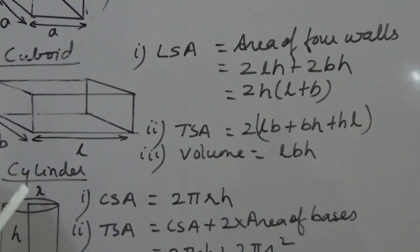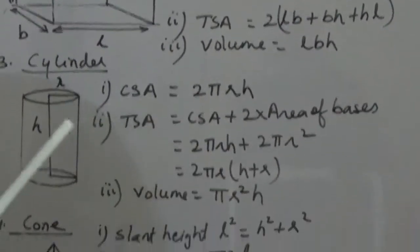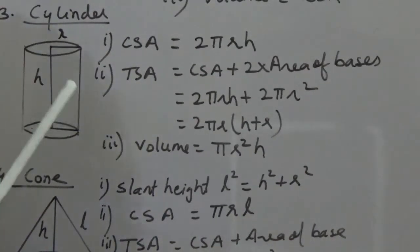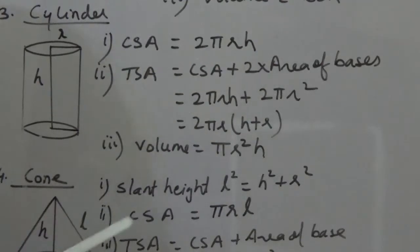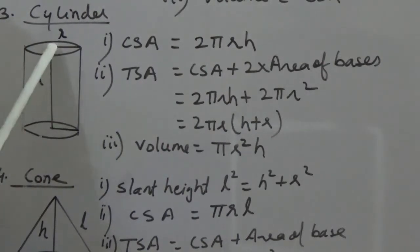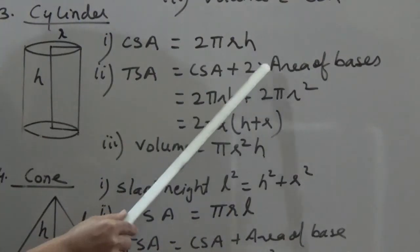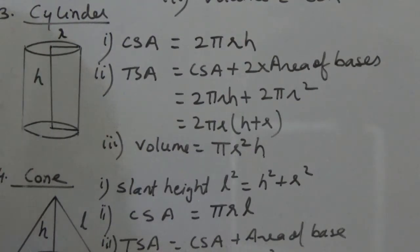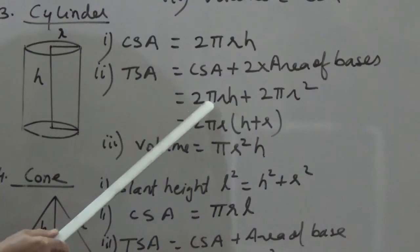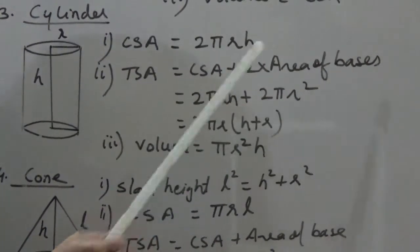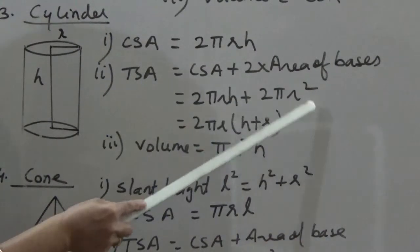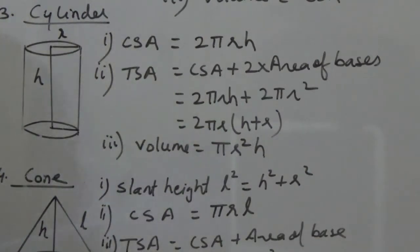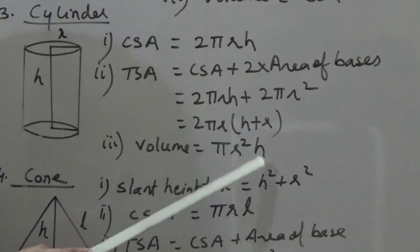The third shape is the cylinder. First we find the CSA — curved surface area of the cylinder, which is 2πRH. For total surface area, we add the curved surface area plus the area of the 2 circular bases: 2πRH + 2πR². Taking 2πR common, the total surface area of a cylinder is 2πR(H + R). The volume of a cylinder is πR²H.